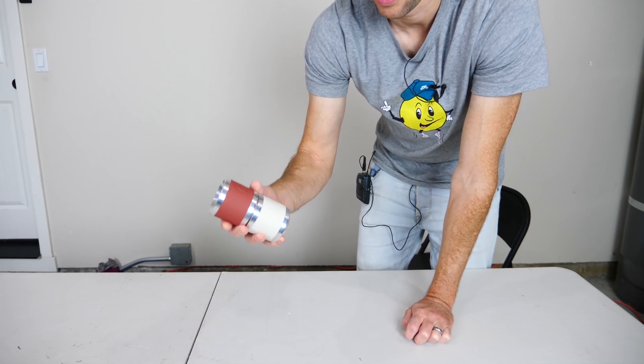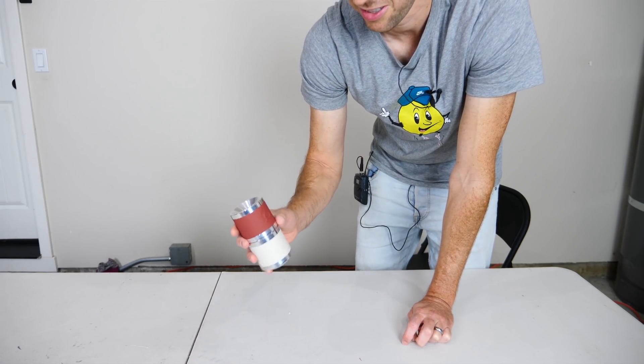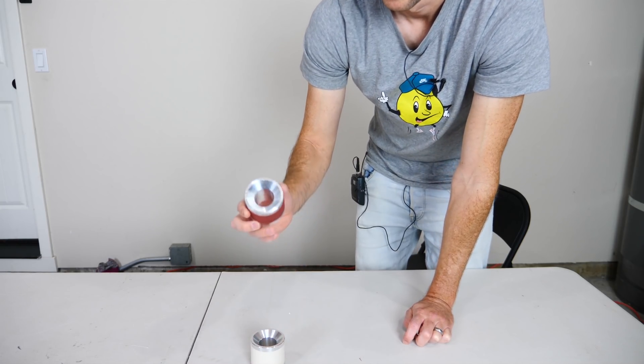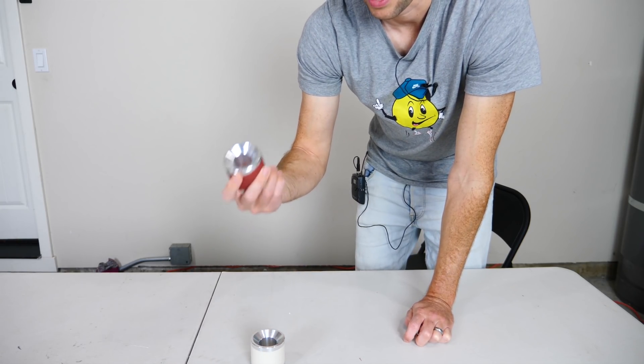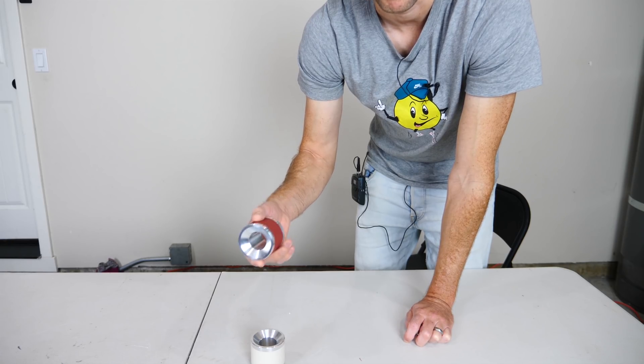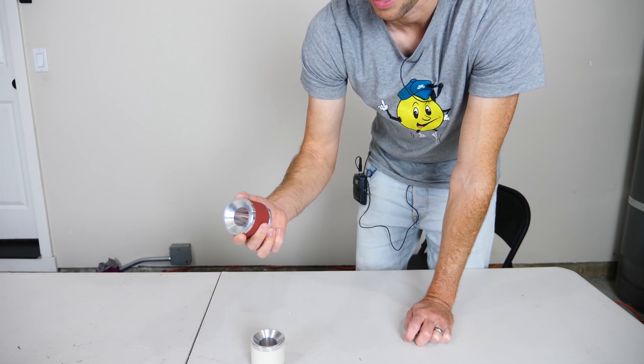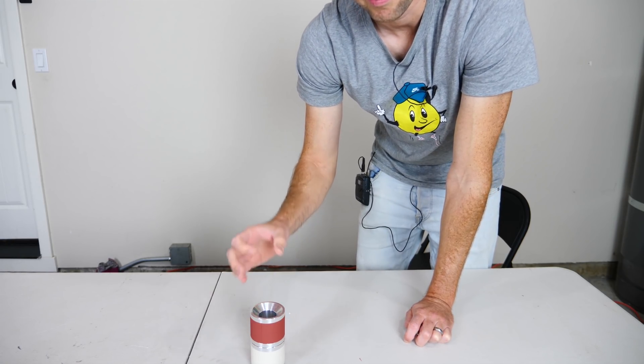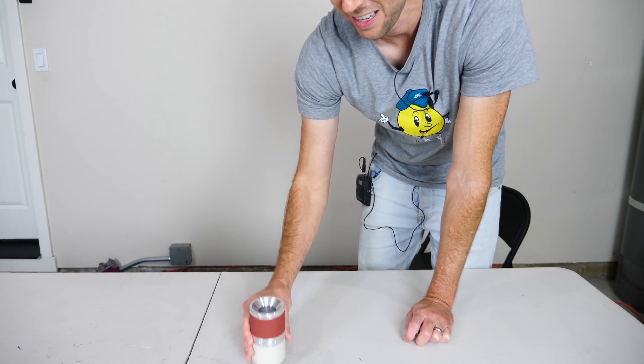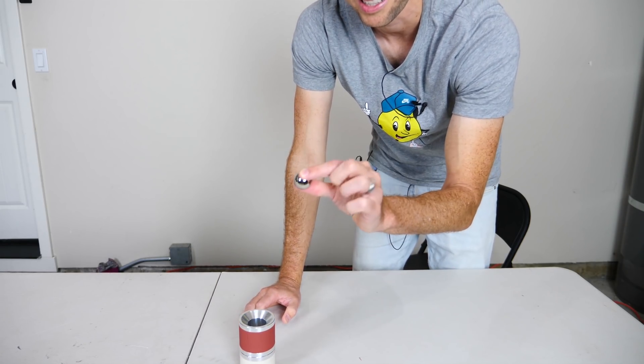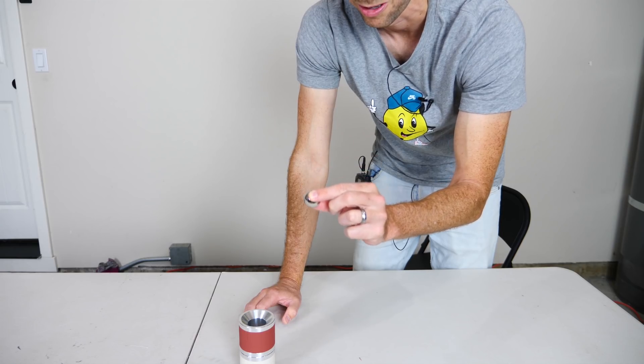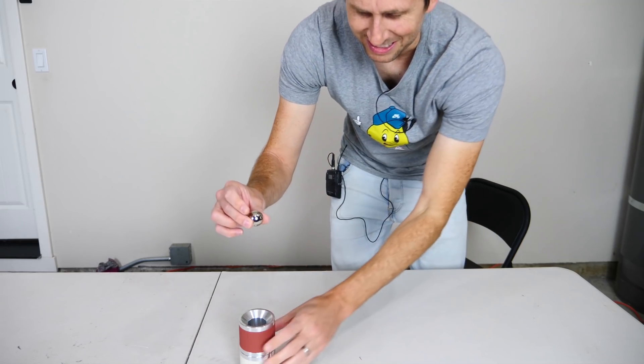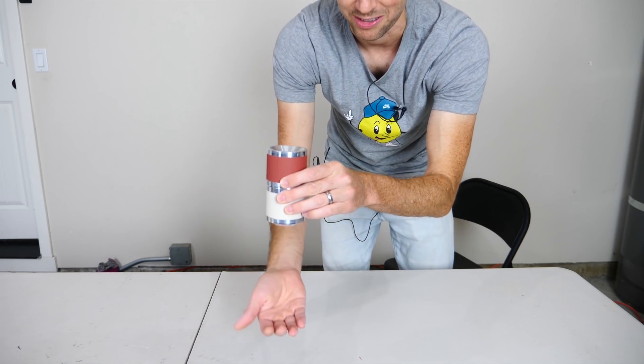But now let's cool these two cylinders of aluminum down to liquid nitrogen temperatures and see what happens. Because the resistance of this aluminum should be reduced by around a factor of two when I cool it down to liquid nitrogen temperatures. So that means we'll be able to get much stronger eddy currents in it and so the magnet should fall through it much slower.